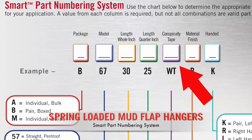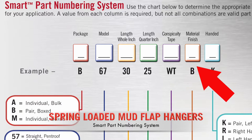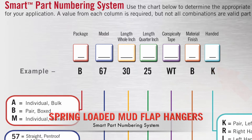The fifth character represents if the hanger has conspicuity tape or not. The sixth character represents the hanger material finish. The seventh character represents if the part is a pair or individual.